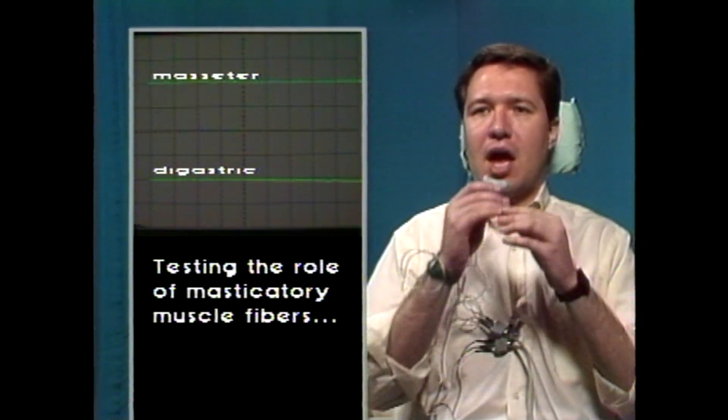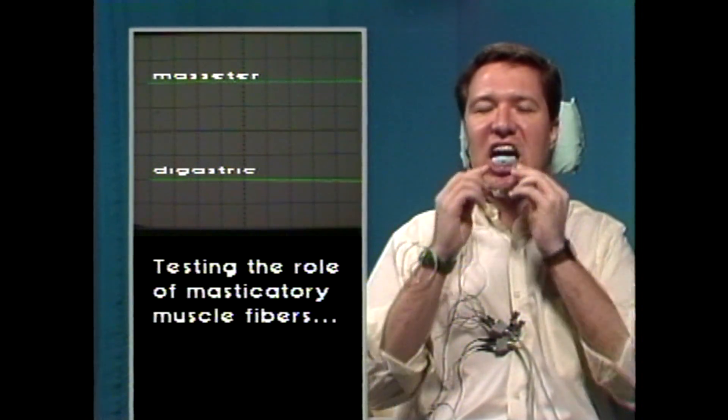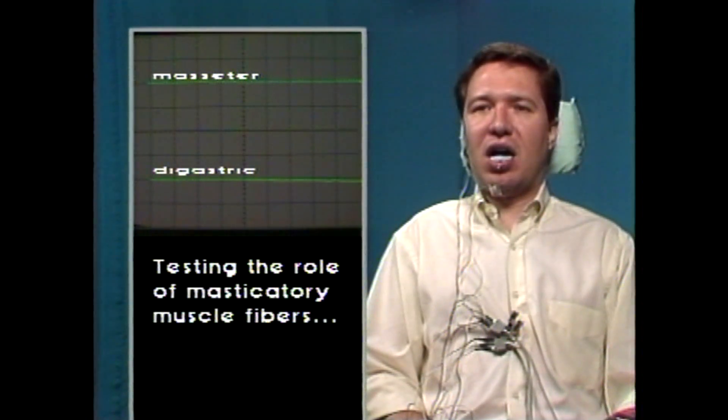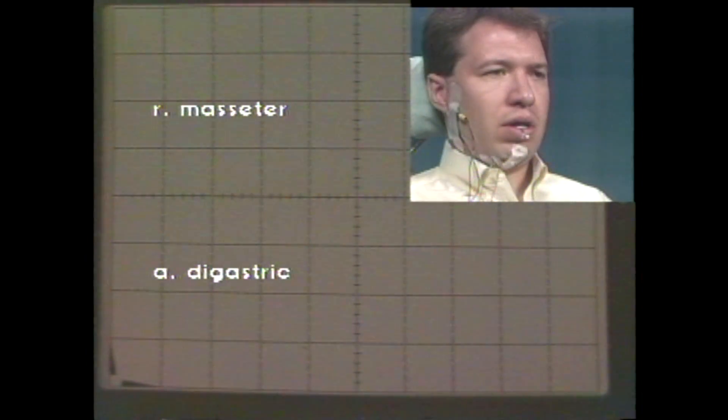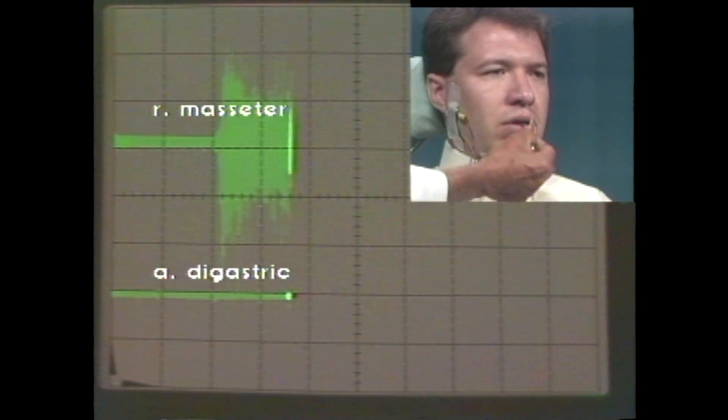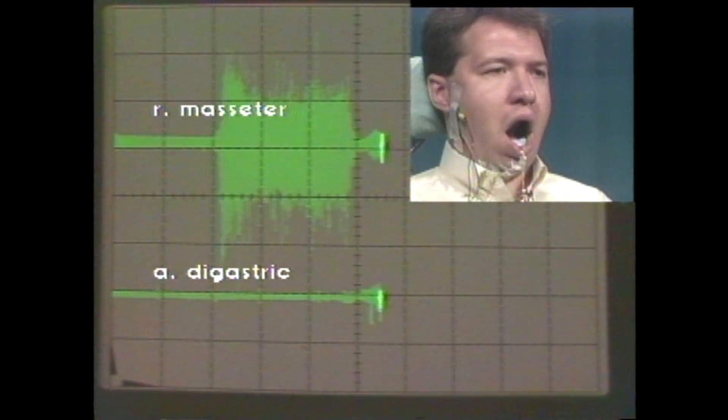In this procedure, the subject will be instructed to place an acrylic anterior splint over the lower central incisors. The mandible will be placed in the clinical rest position and little electrical activity is recorded. The subject will bring the teeth into maximum intercuspation and an increase in EMG activity is recorded. A 500 gram weight is added and the subject is instructed to lower the jaw then elevate the jaw. Note the recruitment of masseter muscle fibers to perform work.